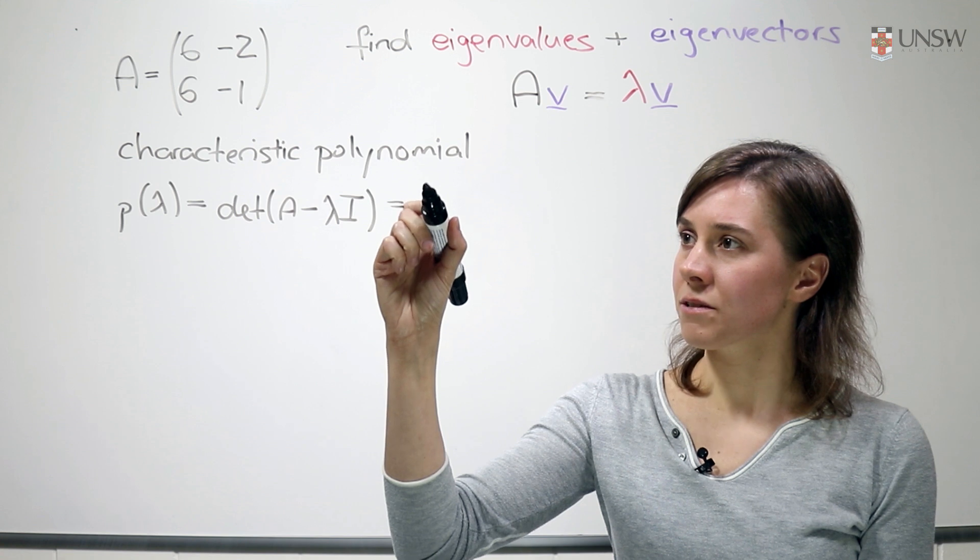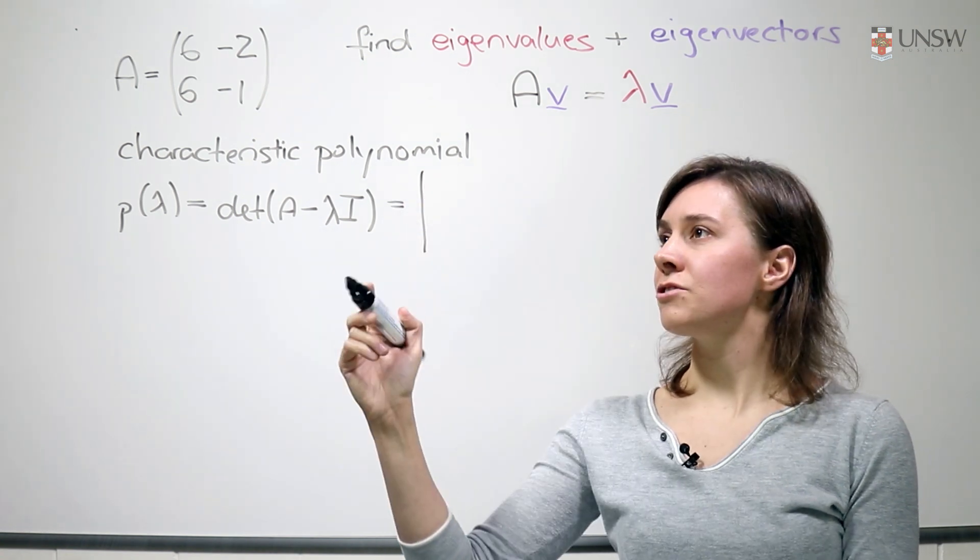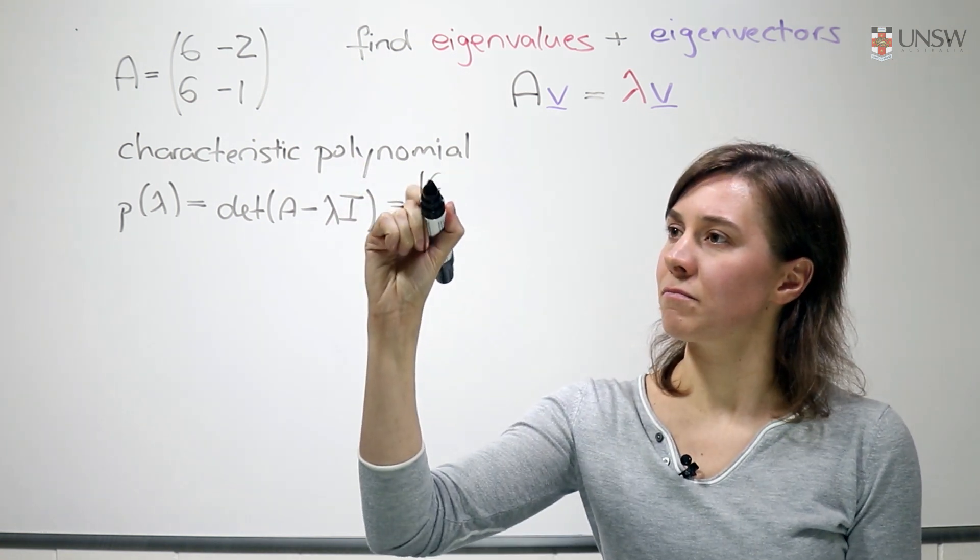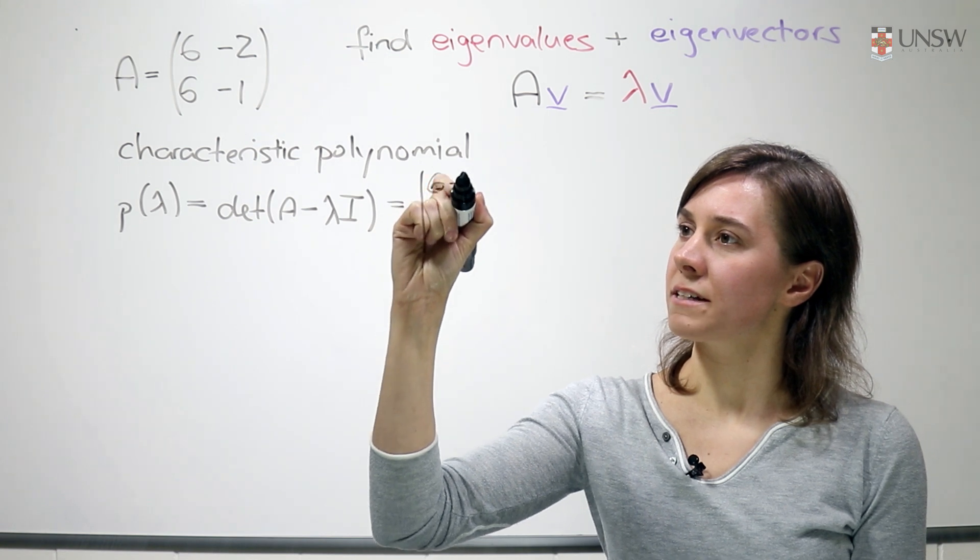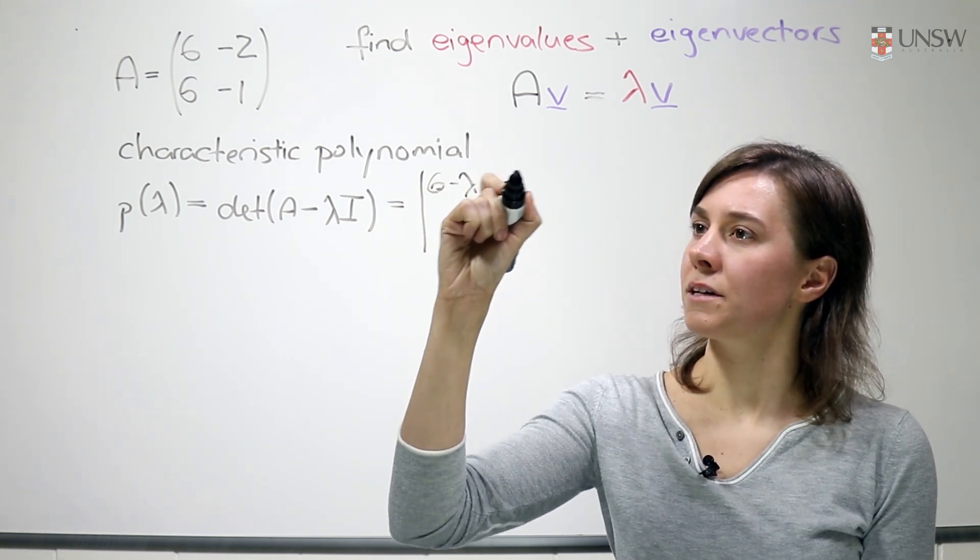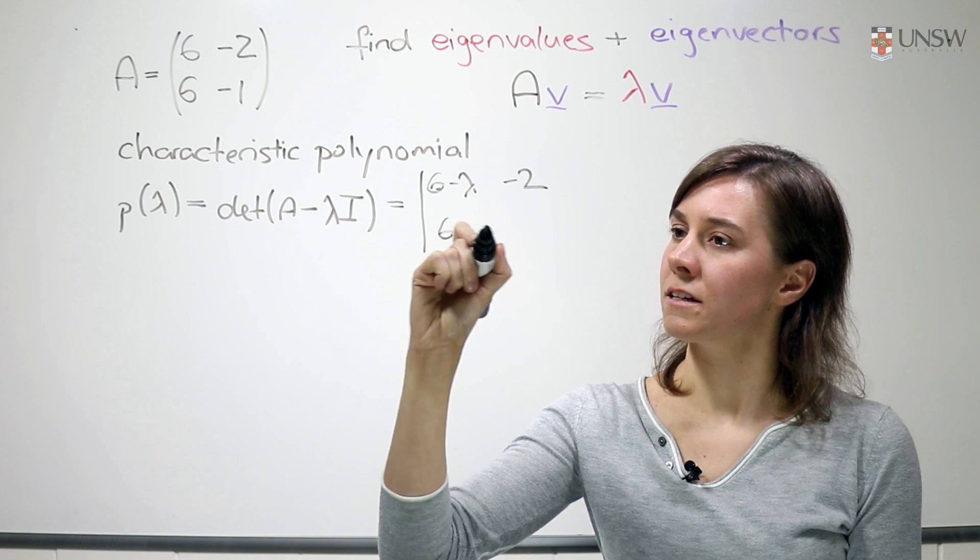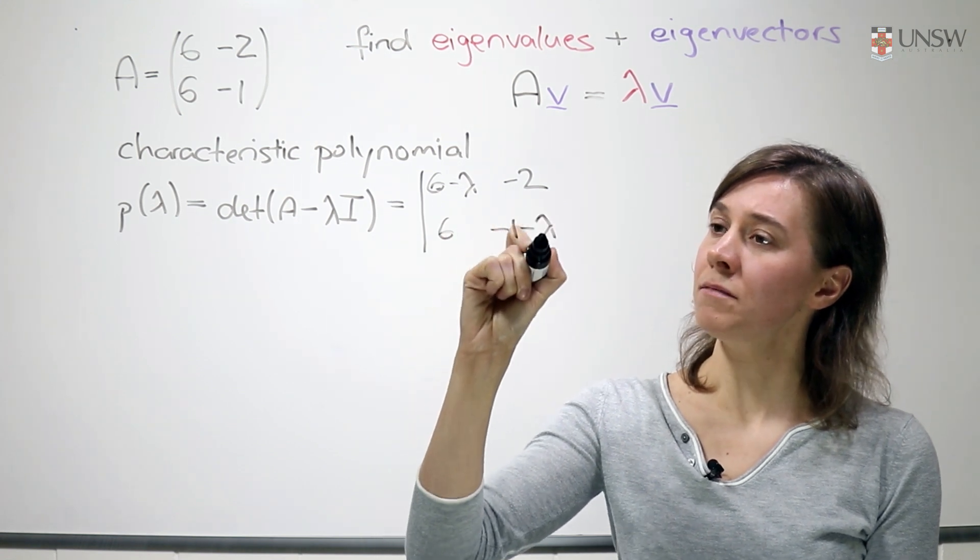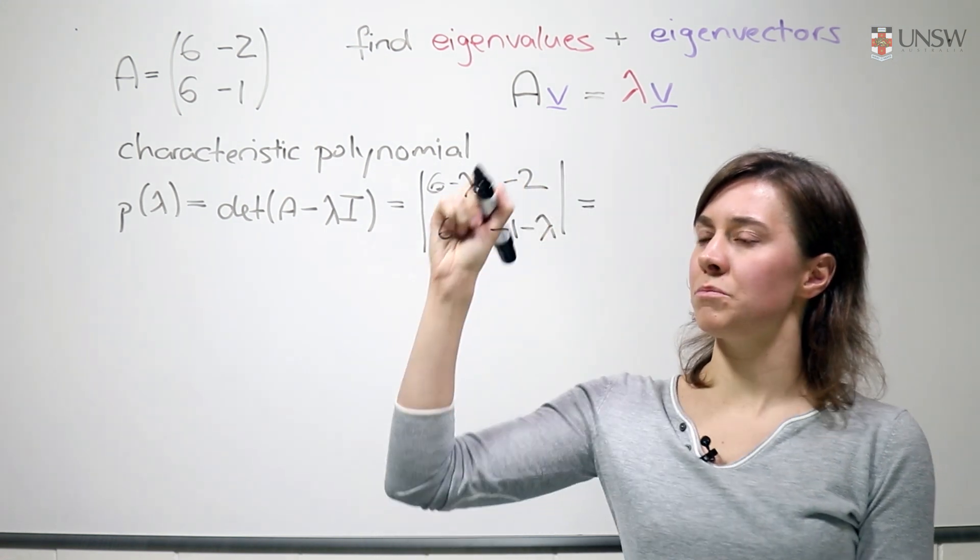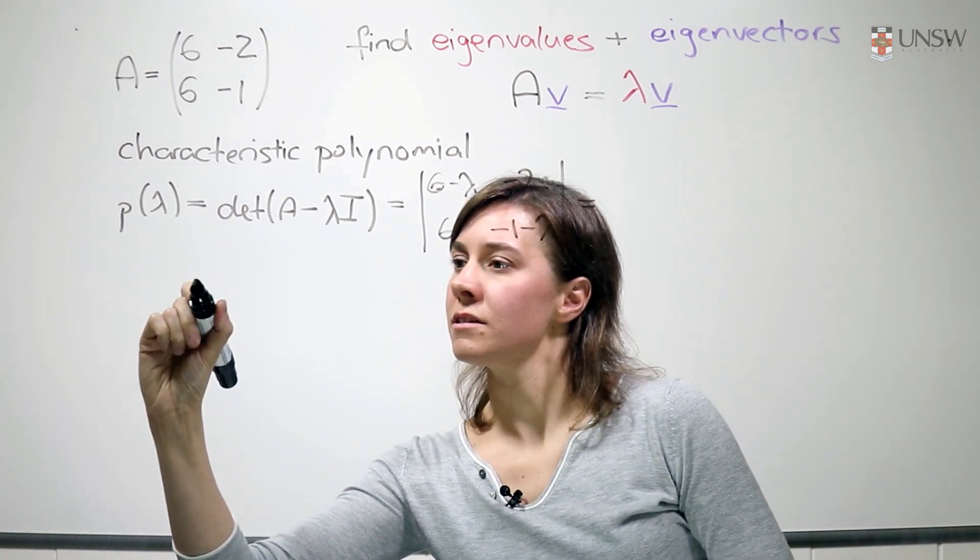So let's compute that. We get the determinant of the matrix 6 minus lambda, minus 2, 6 and minus 1 minus lambda. I'd like to compute the determinant of this.